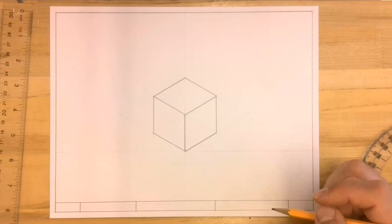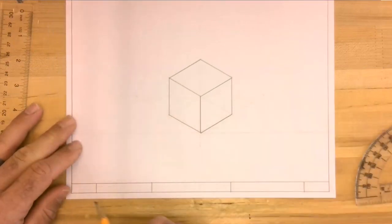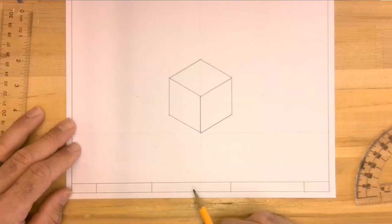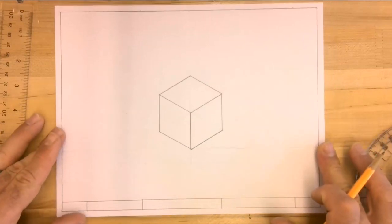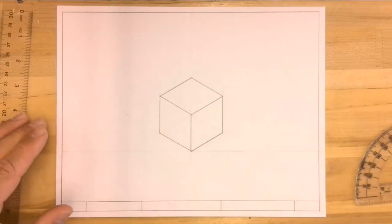Once you get to this point, all we need to do is fill in our border and title strip with our date, our school information, our drawing name, which will be isometric cube, and your name over here. And then you can take a screenshot of this and post it into the assignment in our Google classroom.